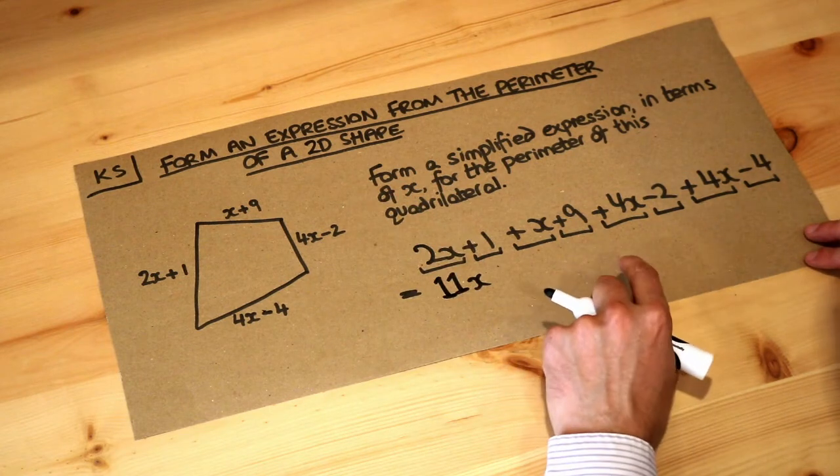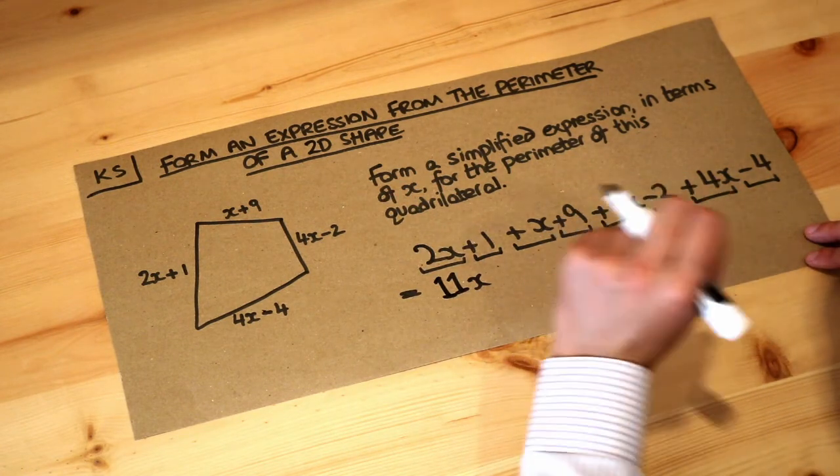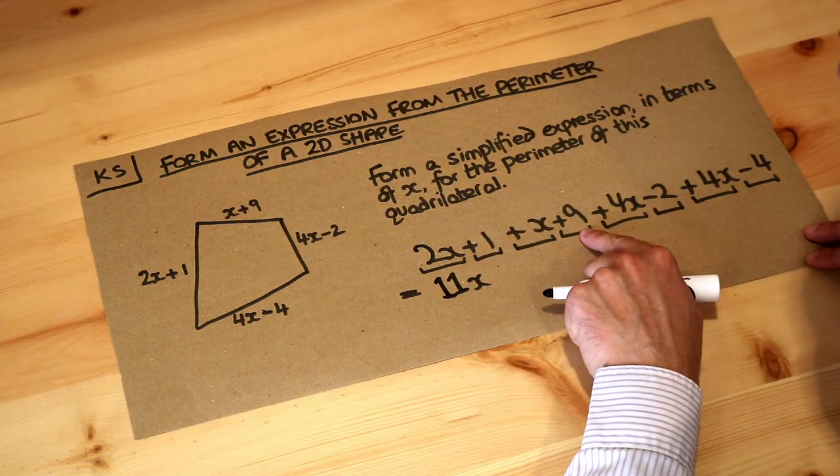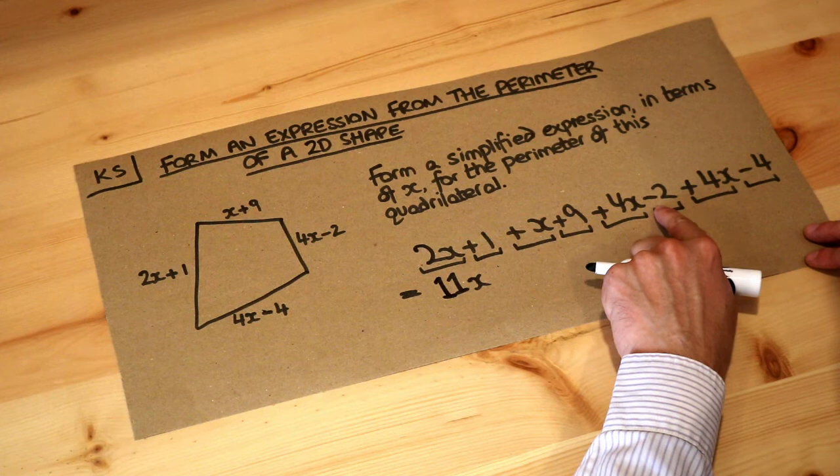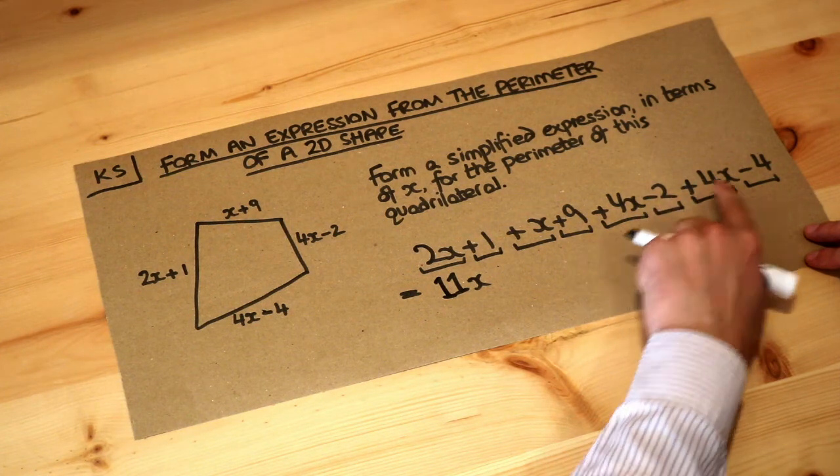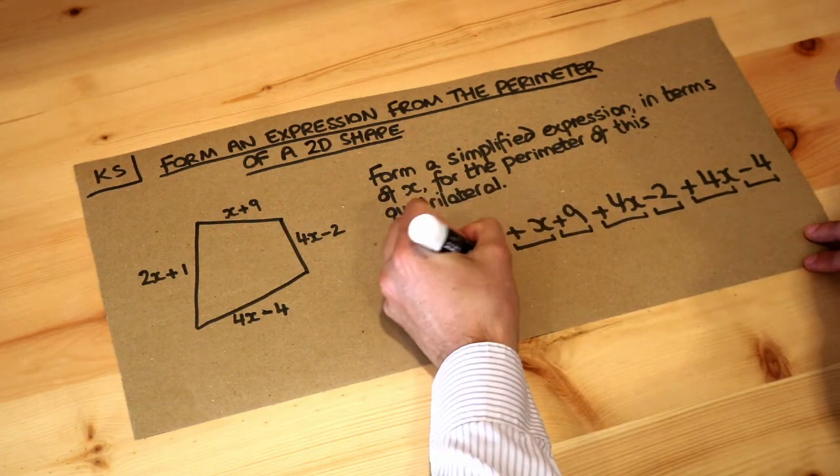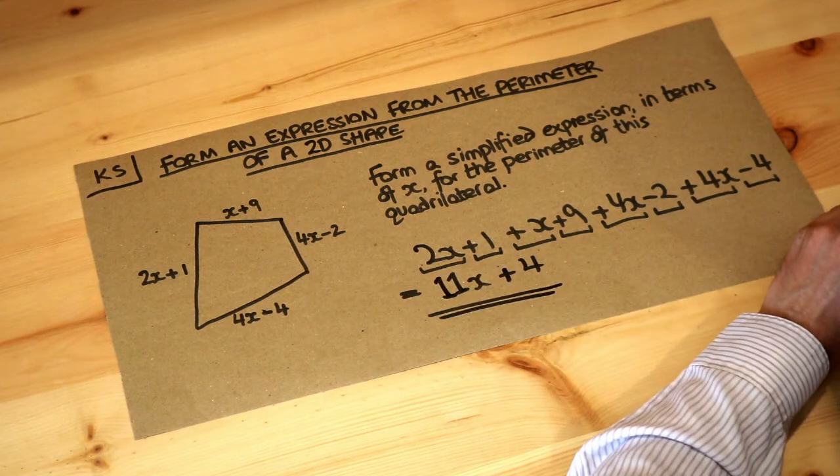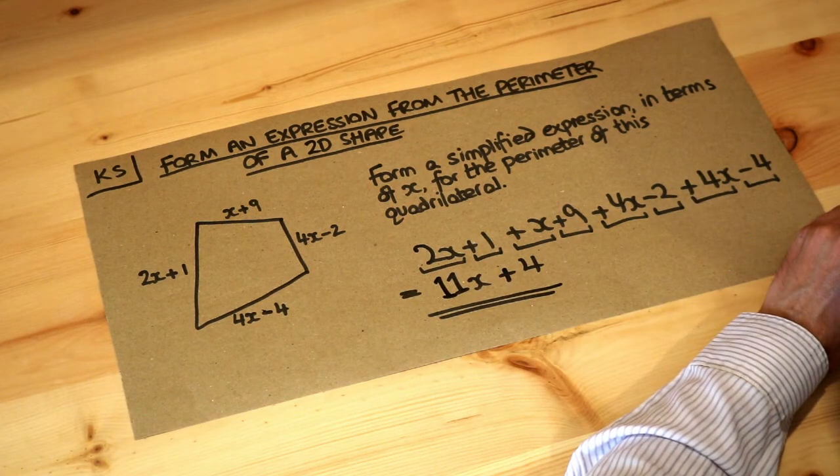Then collect the constant terms together. Remember that constant terms are ones that don't have a variable in them, so no letter. We've got 1 plus 9 is 10, minus 2 is 8, minus 4 is 4. So 11x plus 4 is the final expression for the perimeter of this shape.